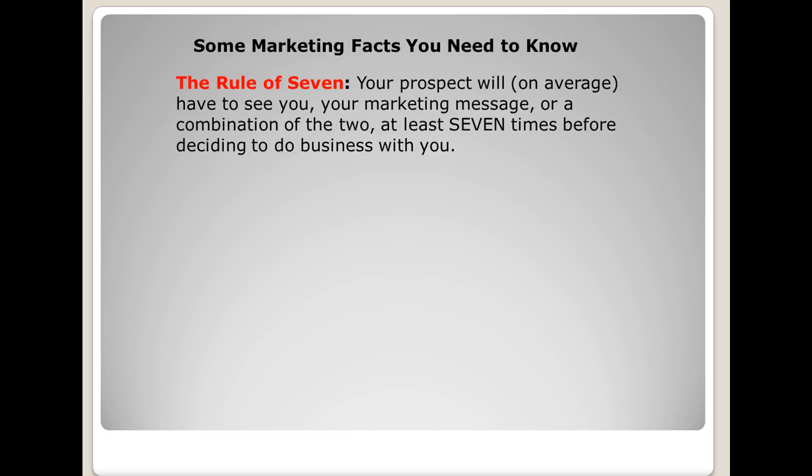The Rule of Seven means your prospect will, on average, have to see you or your marketing message at least seven times before they'll decide to do business with you. Familiarity with you will make you more believable and credible. That's why big corporations like Coke and KFC are constantly trying to get in front of you — they want you to naturally gravitate toward them. Social media makes it very easy to get in front of your prospect over and over again and actually interact with them.